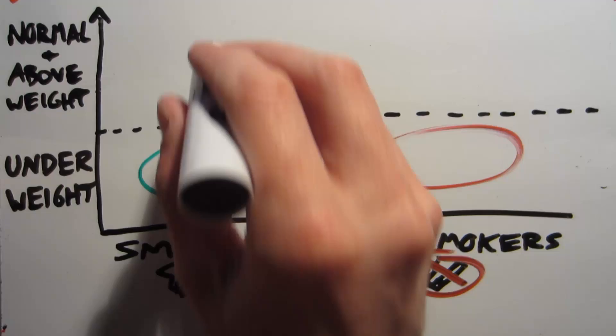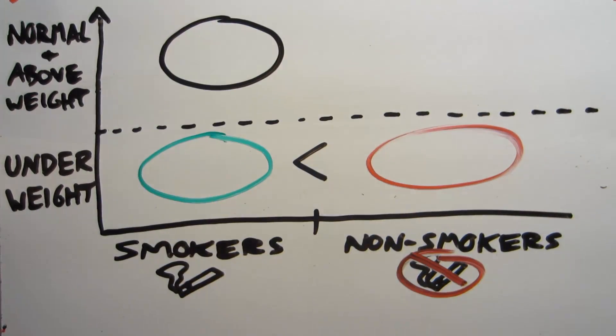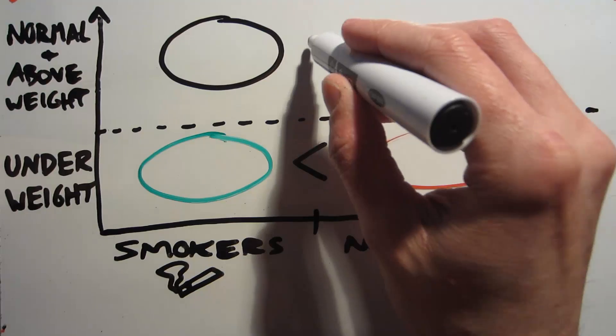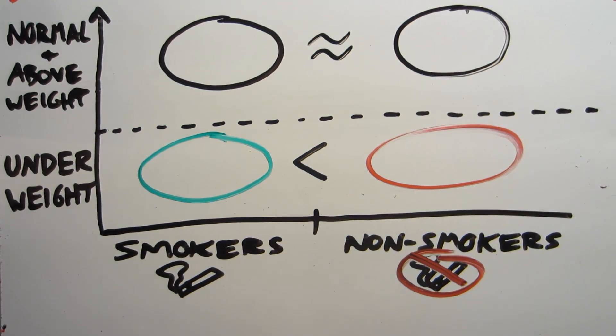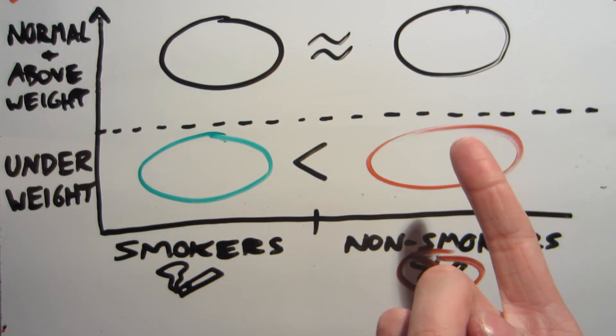Fact number two is that non-underweight smokers babies, so all the rest of them, have about the same mortality rate as non-underweight non-smokers babies. So in either case, you're the same or better off, it would seem, than a non-smokers baby.